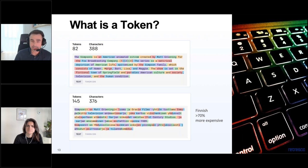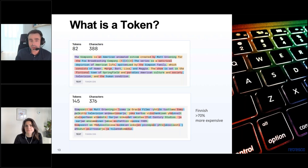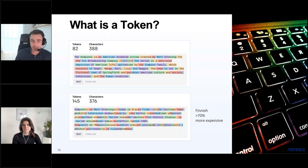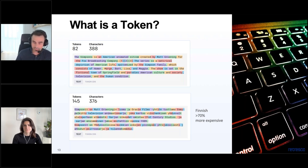To illustrate: in an English text, almost every word is its own token. In a similar Finnish text, every word is split into different tokens. Although these texts have almost the same number of characters — around 380 — the Finnish text uses almost double the tokens. This means processing Finnish with GPT would be more expensive than processing English.